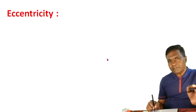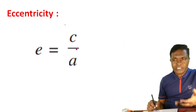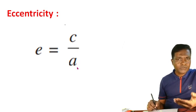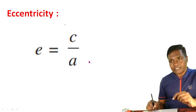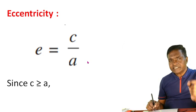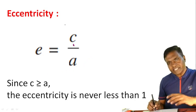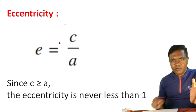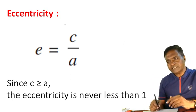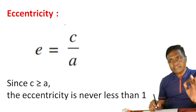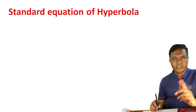Eccentricity, similar to an ellipse, is the ratio of C to A — defined as e = c/a. In the case of hyperbola, eccentricity e is greater than 1, because C is greater than A — the focus distance from the origin is greater than A. So the eccentricity will always be greater than 1 for a hyperbola.